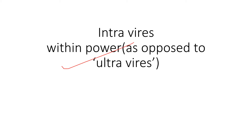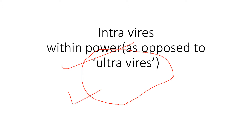The next word is 'intra vires,' which means within power. Many of you have heard the word 'ultra vires,' which means beyond one's power — totally beyond our scope. Intra vires means within power and ultra vires means beyond one's power; they are opposite to each other.